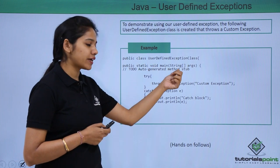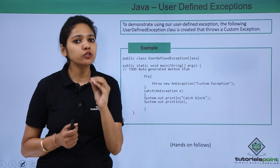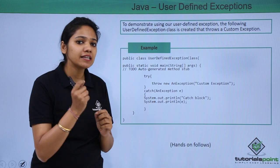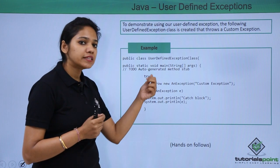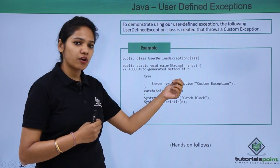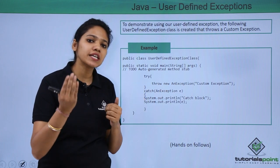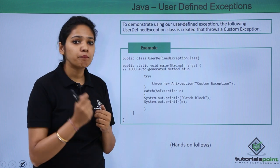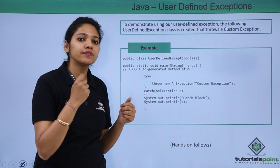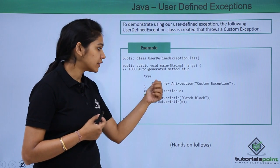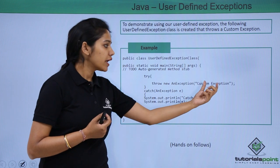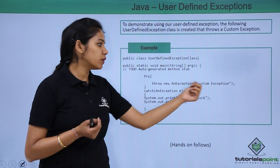We have created a class called UserDefinedException. In this class, we are trying to throw the customized exception that we have created — the AnException class. In the try block, if you are trying to execute certain code, and you think these statements may throw an exception that you have created, then you need to write it here. Remember, the throw keyword is always written inside the method.